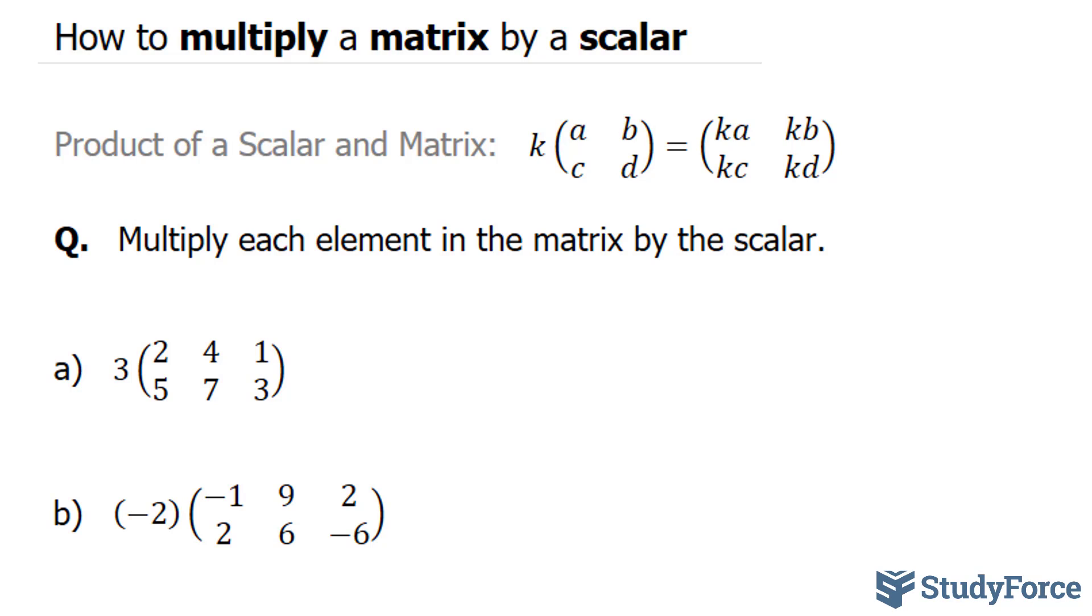To multiply a scalar to a matrix, as shown here, you'll take your scalar quantity and multiply it to each individual number within the matrix.